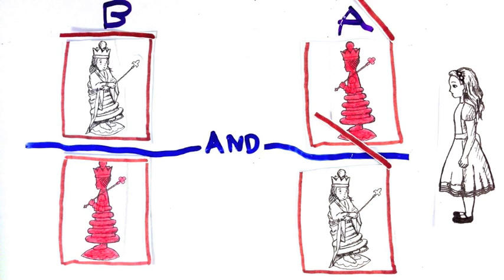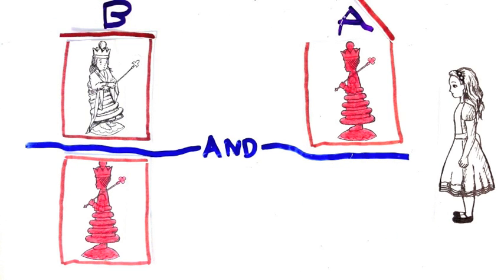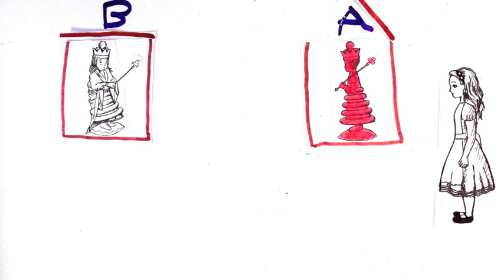What happens if Alice checks object A? She collapses the state of object A, which is weird but as usual. But she also collapses the state of B, which she didn't even touch.